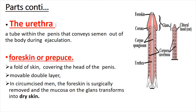After the glans, there is the foreskin. The foreskin is a fold of skin covering the head of the penis; it is a movable double layer. In circumcised men, the foreskin is surgically removed — it is also called the prepuce — and the mucosa of the glans transforms into dry skin. Most Muslim people perform circumcision, believing that dry skin helps prevent disease related to the penis.